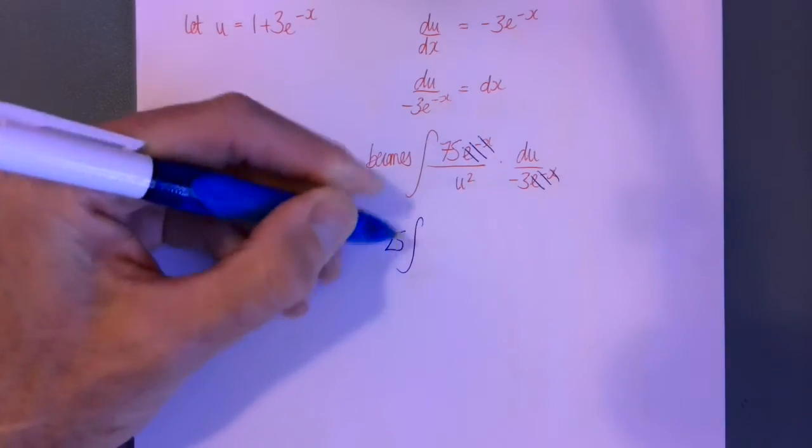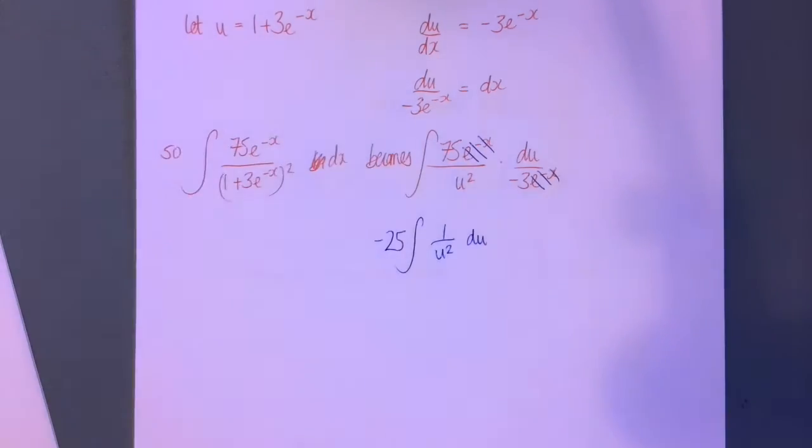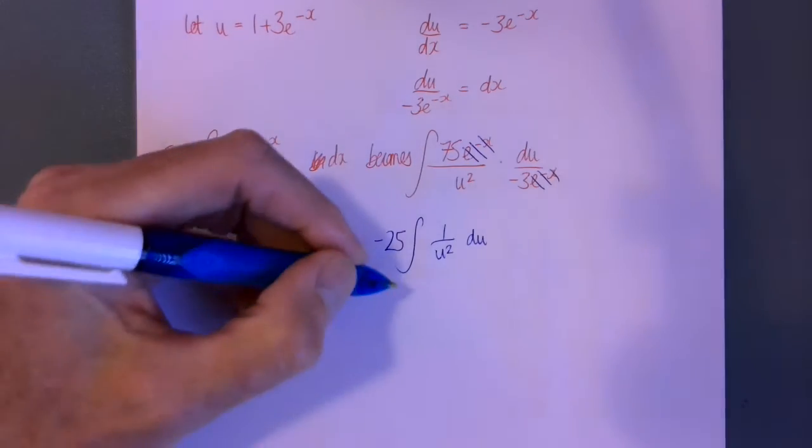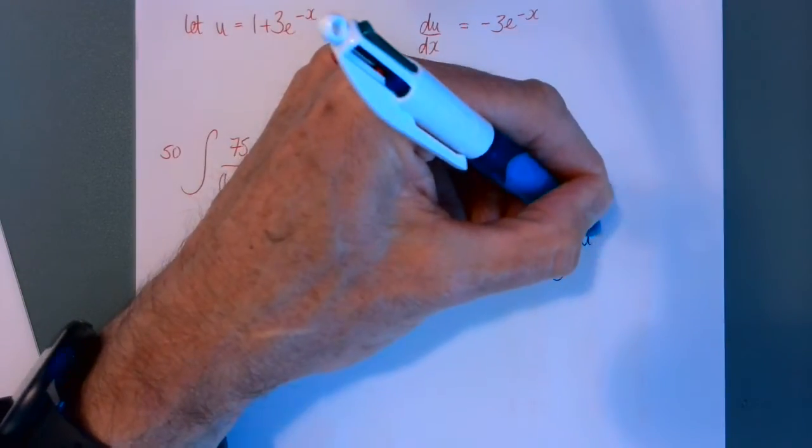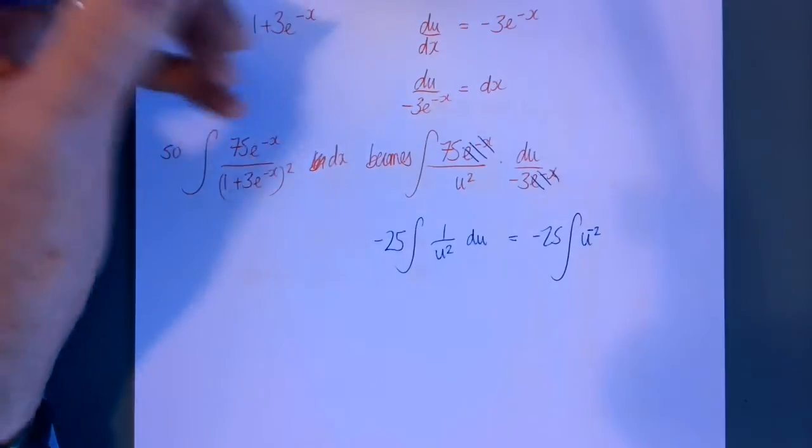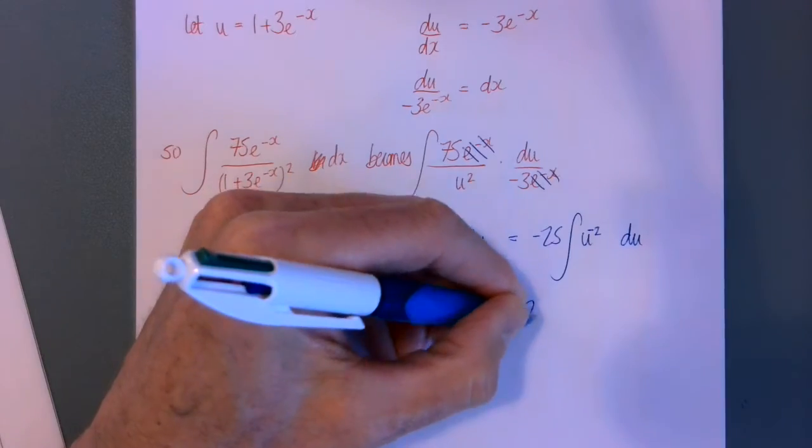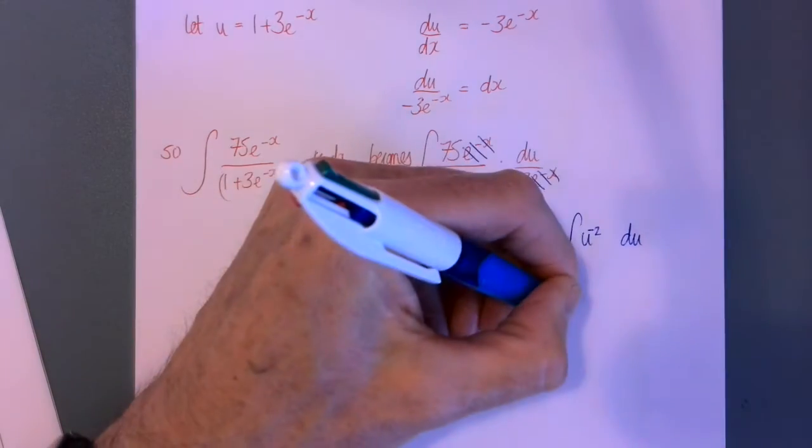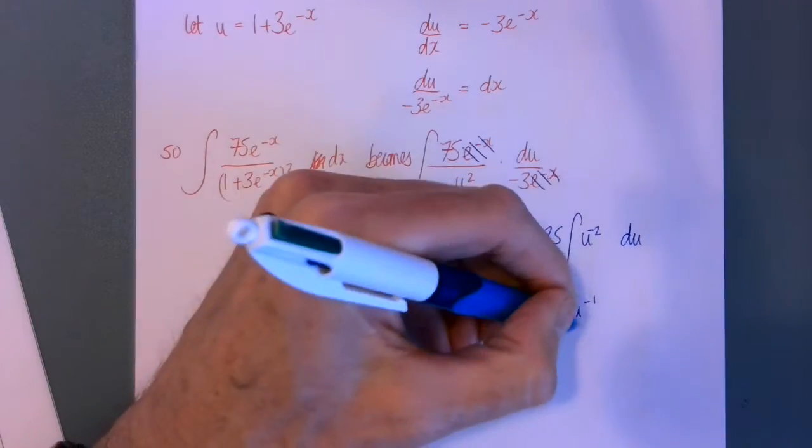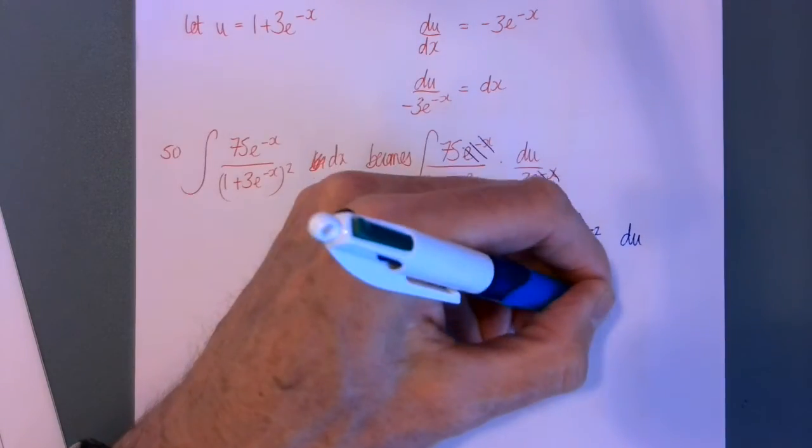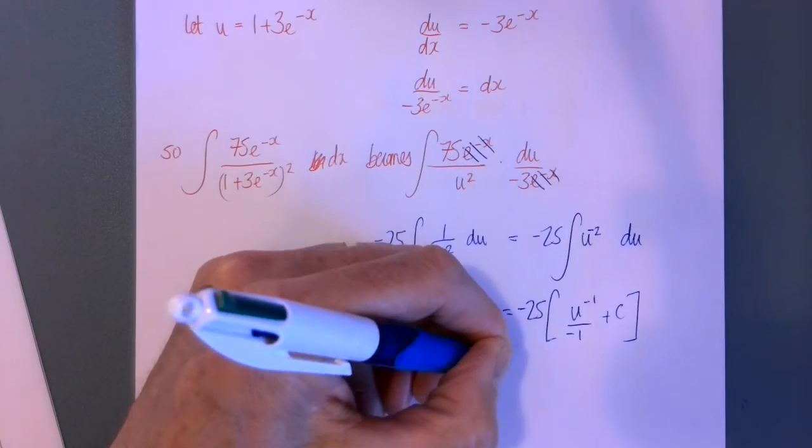So I'm left with 75 divided by minus 3 which is minus 25, and I'm going to leave that out the front, which I could also write as.